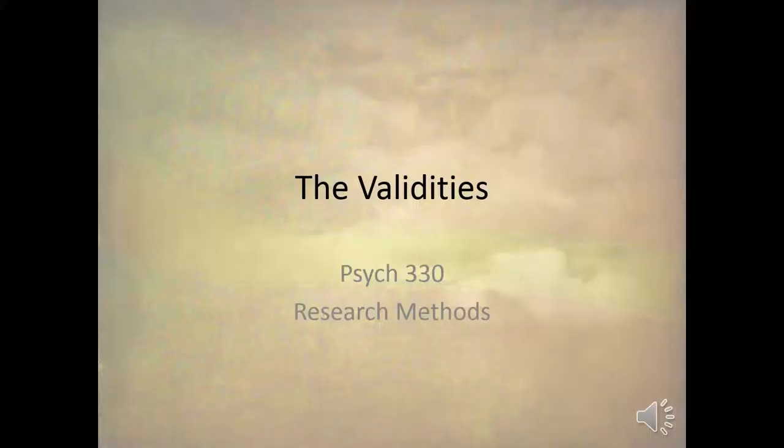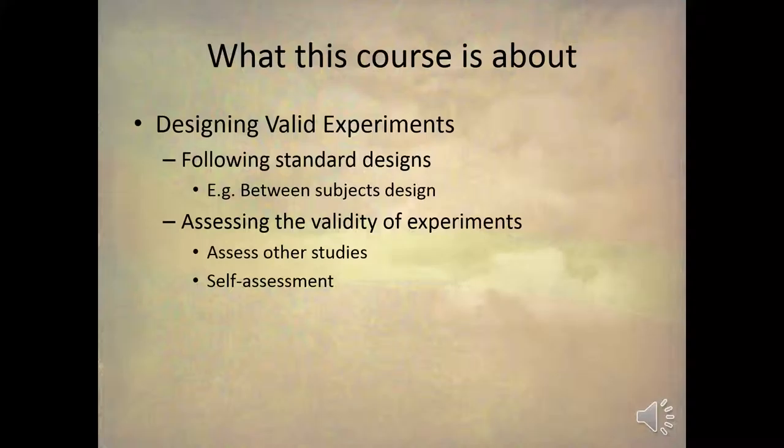Let's talk about the validities — the different types of how an experiment can be valid or invalid. That's really what this course is about: the whole idea of designing valid experiments and identifying valid experiments versus invalid experiments. This course is about designing valid experiments, and you do that by following standard designs.